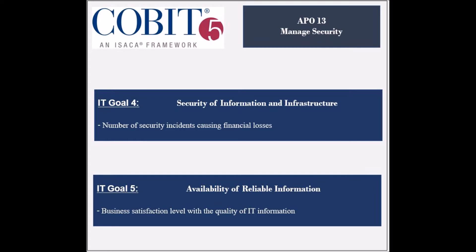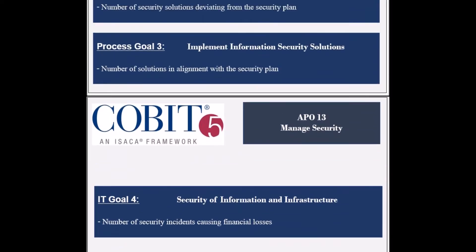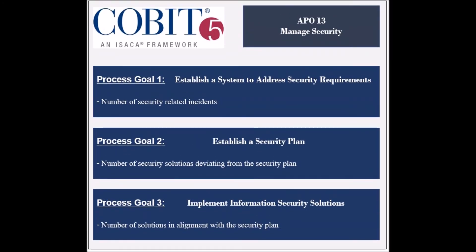The fifth and last supported goal is to ensure the availability of reliable information for decision-making. Its achievement is measured by the business satisfaction level with the information quality and by the number of business incidents caused by the non-availability of information. The process has three process goals.